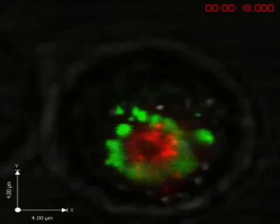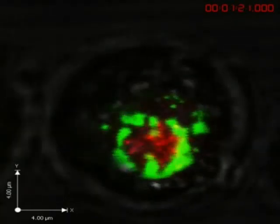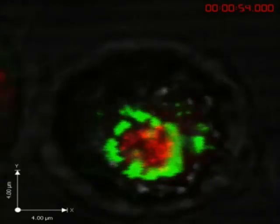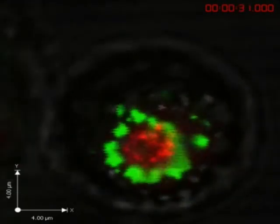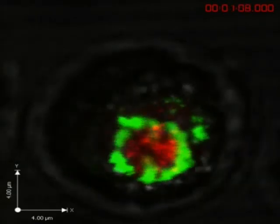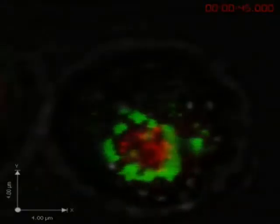And then they are actually released onto the diseased cell through this ring-shaped structure at the interface, and this allows the NK cell to destroy the diseased cell.